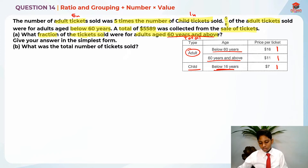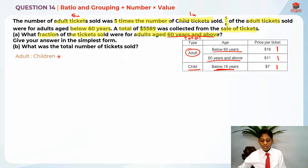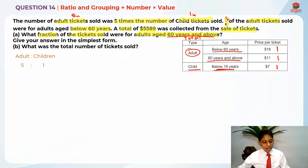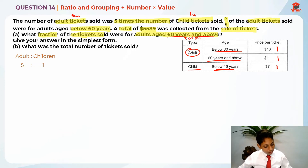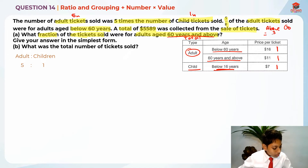First, I'm going to write down the information I already know, like the adult to child ratio. For adult to children, I'll put 5 is to 1, because adult is 5 units as there were 5 times the number of child tickets. Next, there's this other ratio we already know because 5/8 of the adult tickets were for below 60, so for above 60 it will be 3 over 8.